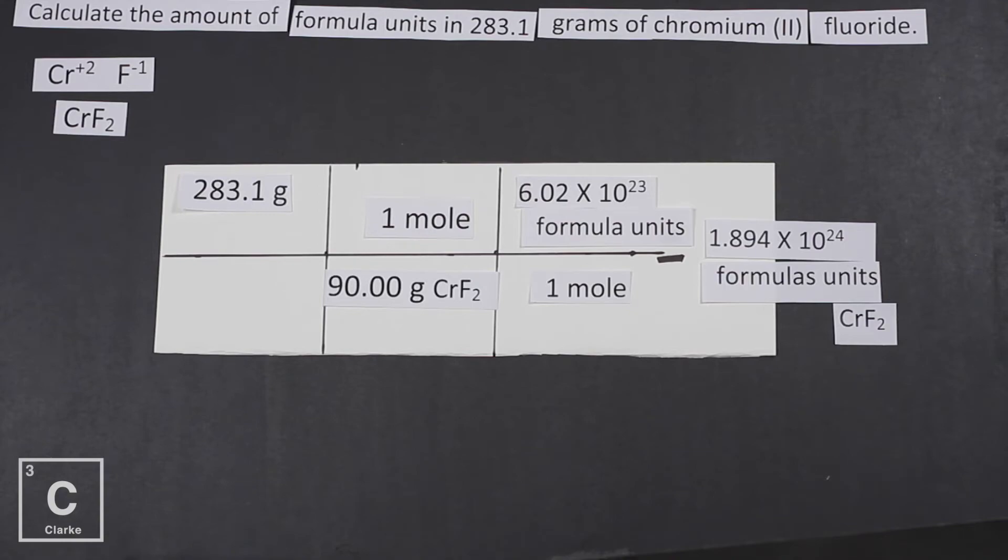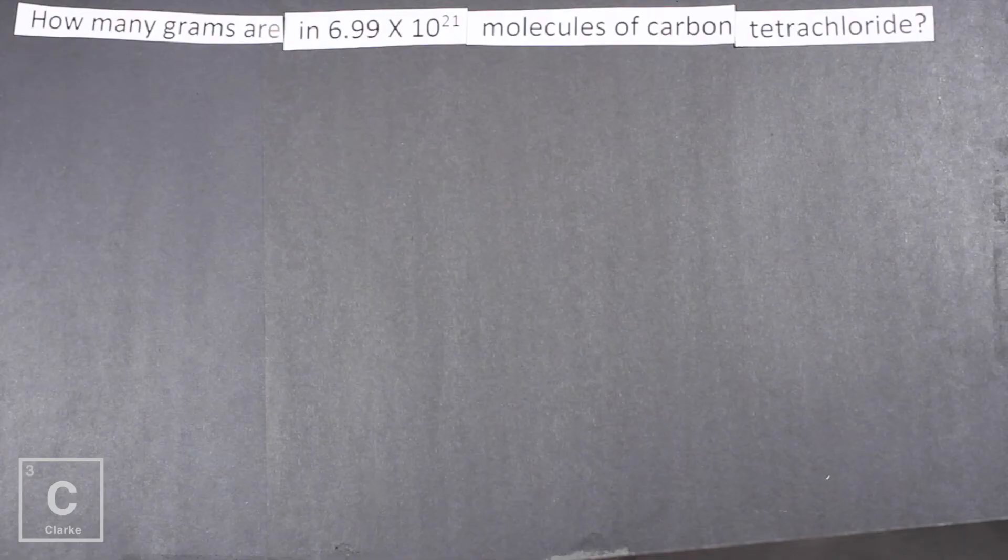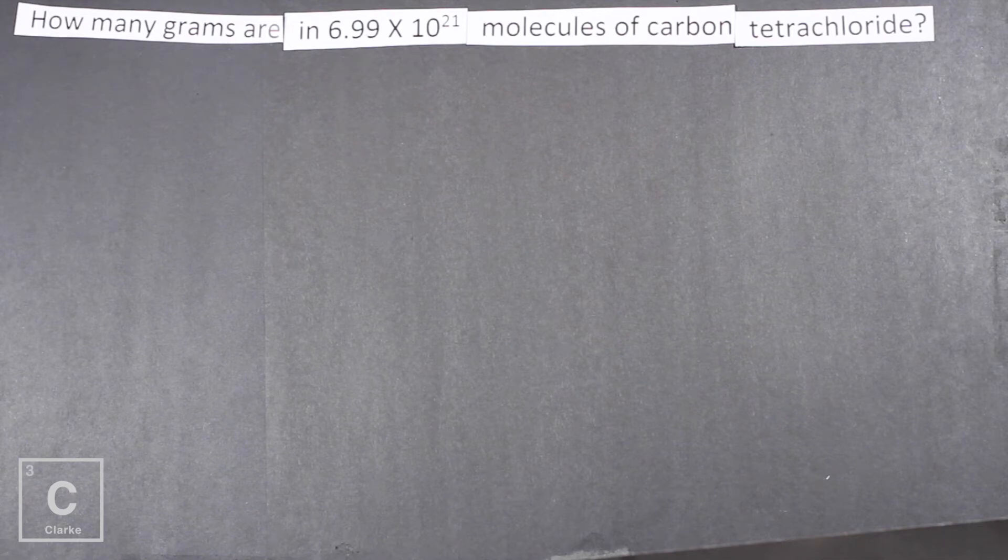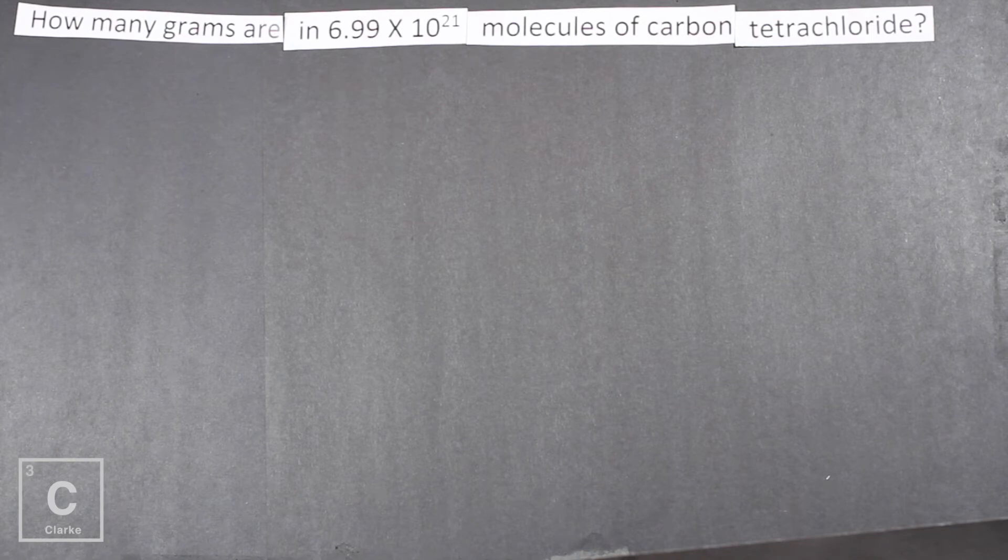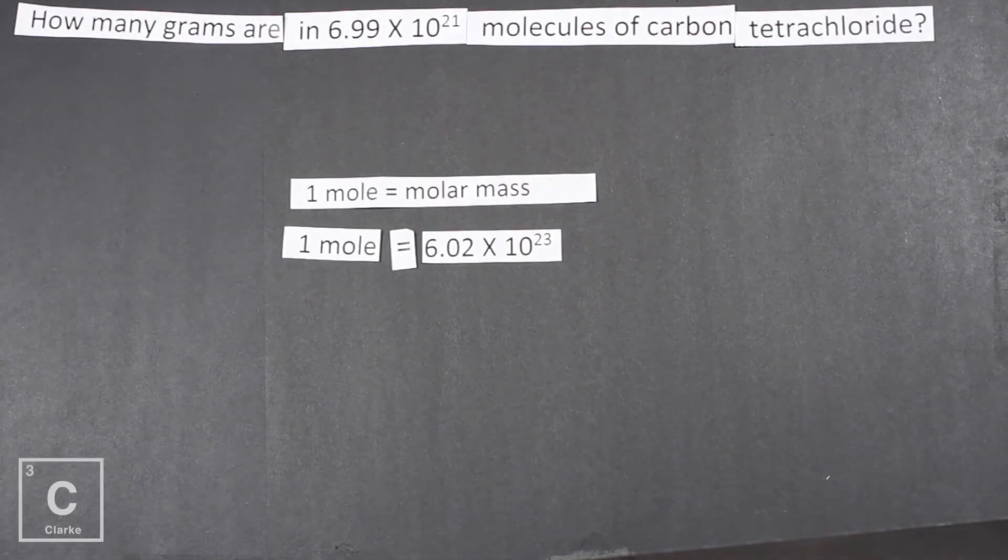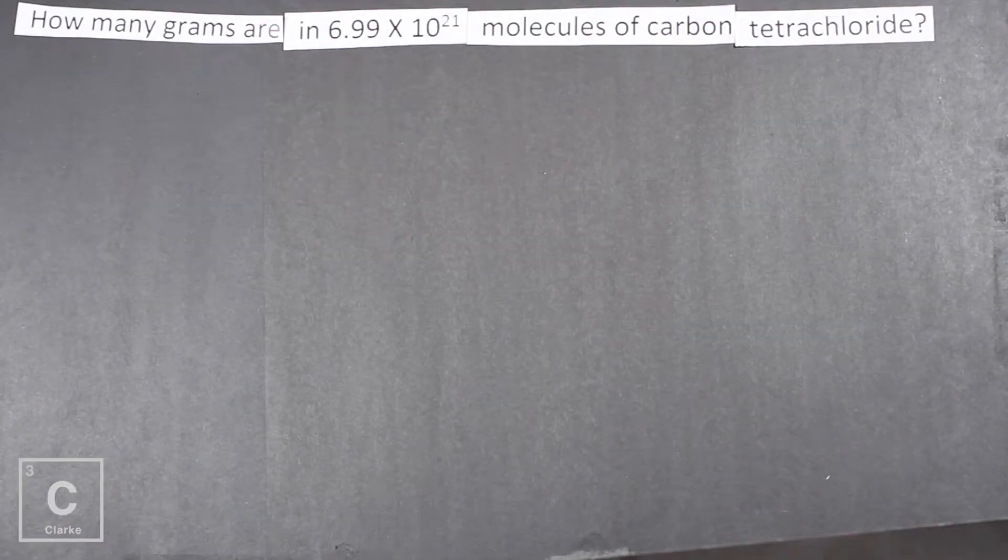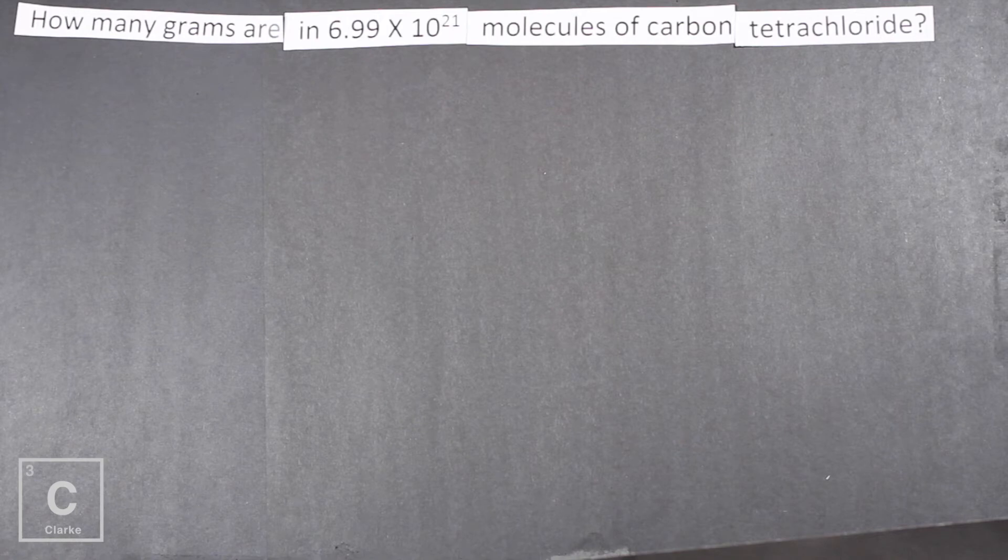Let's work another problem so we can really make this sink in. How many grams are in 6.99 times 10 to the 21 molecules of carbon tetrachloride? The first thing we need to realize is this problem does not say moles. If it doesn't say moles we've got to use both of our conversion factors. One mole equals the molar mass and one mole equals Avogadro's number. We're going to use both of these in this problem. The next thing we need to think about is what is the molar mass? Well the molar mass of what? Carbon tetrachloride. That's just CCl4.